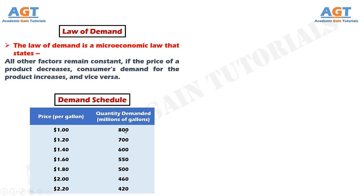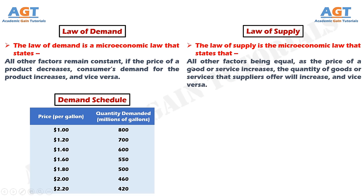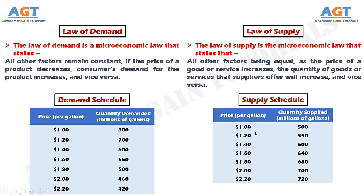The law of supply is the microeconomic law that states that, all other factors being equal, as the price of a good or service increases, the quantity of goods or services that suppliers offer will increase. A supply schedule is a table that shows a range of prices for a good or service and the quantity supplied at each price. This is a supply schedule showing the price for each gallon of gasoline and the change of supply with change of price.